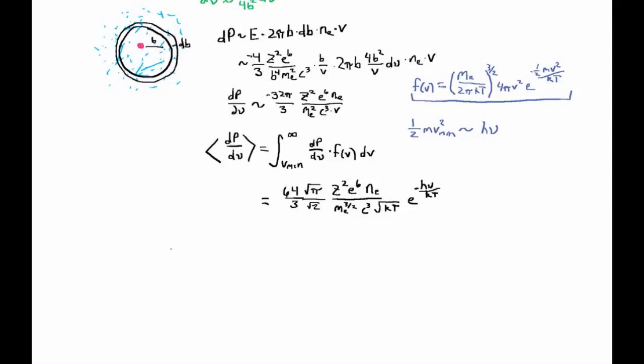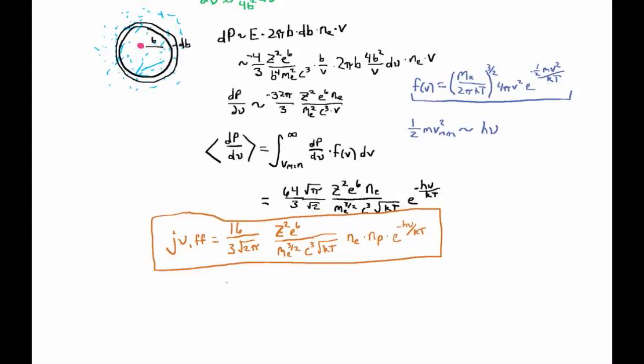Now if we want to compute our emissivity, j sub nu, which comes from our radiative transport equation, the emissivity from free-free emission is going to be this d power d nu radiated into 4 pi steradians. The emissivity for free-free emission has these numerical factors we had, but whereas this was strictly power, j_nu is the emissivity, which is power per frequency per unit volume. The extra factor of volume we have isn't just the number density of electrons, it's also the number density of protons. We have to count up all the number of nuclei per unit volume, which we'll call n_p, assuming they're protons. It's e to the minus h nu over kT. This is the expression for emissivity from thermal Bremsstrahlung.